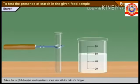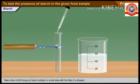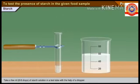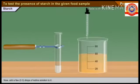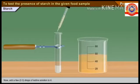Procedure: Take a few milliliters — that is six to eight drops — of starch solution in a test tube with the help of a dropper. Now add a few drops, that is two to three drops, of iodine solution to it. Observe the change in color of the mixture.